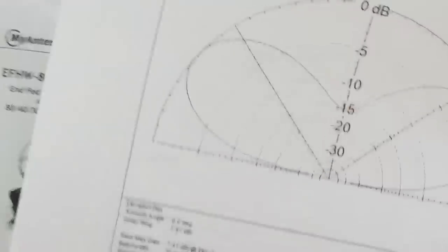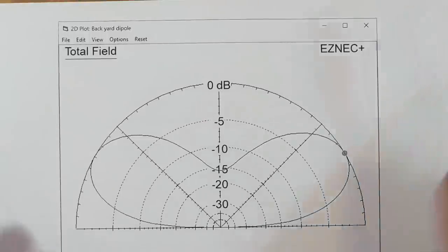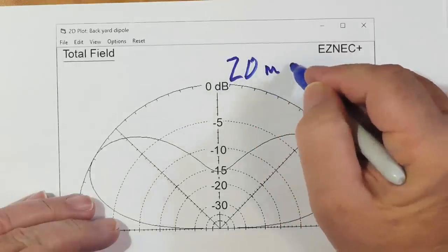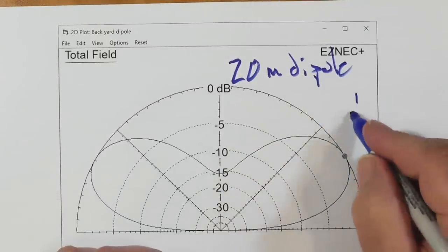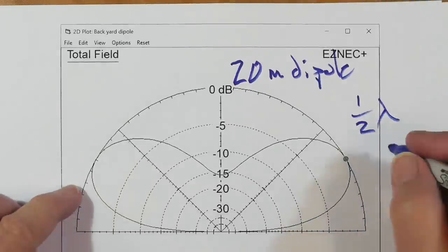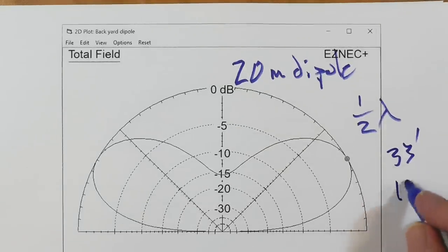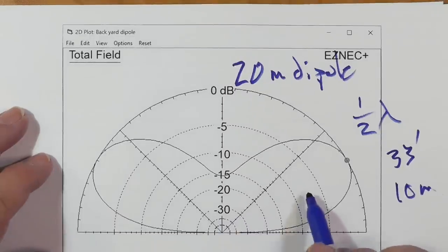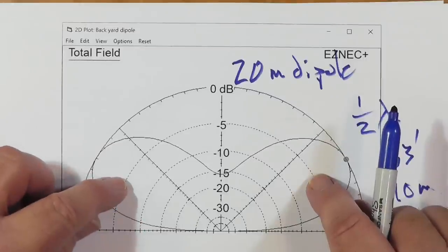This right here is a diagram from EZNEC. This is a 20 meter dipole, and it is at one half lambda in height, which is 33 feet, or I guess that would be 10 meters.